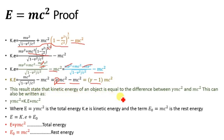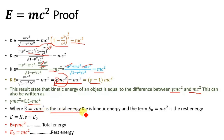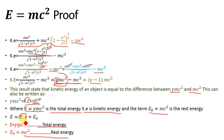This result states that the kinetic energy of an object is equal to the difference between gamma mc square and mc square. This can also be written as gamma mc square equals kinetic energy plus mc square. In this equation, E equals gamma mc square is the total energy, the kinetic energy is the middle term, and mc square is the rest energy, written as E naught equals mc square. So we write this equation as E equals kinetic energy plus E naught, where E equals gamma mc square is the total energy and E naught equals mc square is the rest energy.